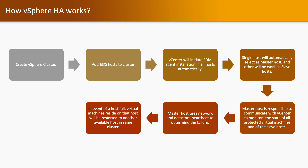How does vSphere HA work? First, you create a vSphere cluster and add a minimum of two — recommended at least three — ESXi hosts. Once you enable HA on the cluster, it will automatically install the HA agent (FDM agent) on all ESXi hosts. After installation completes, one ESXi host in the cluster will work as the master and the others as slaves. The master host is responsible for communicating with vCenter to monitor the state of all protected virtual machines and of the slave hosts.